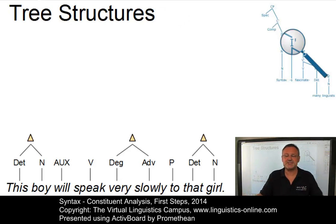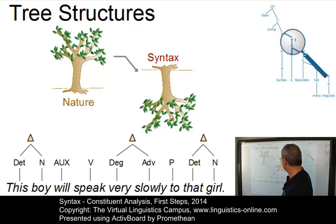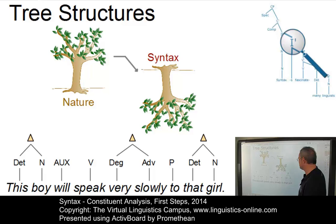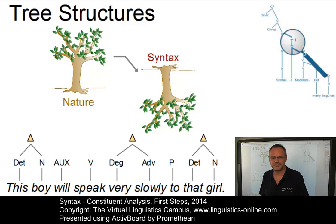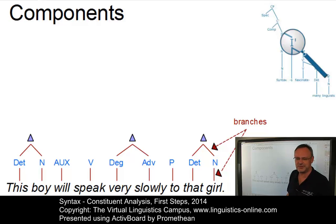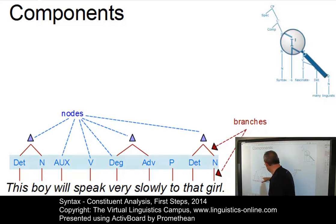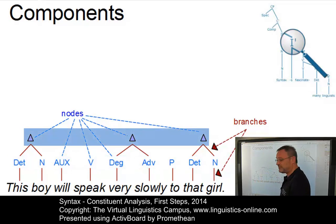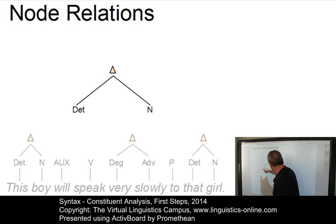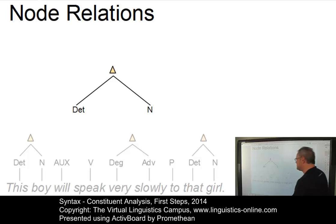The result of constituent analysis is a tree diagram. Interestingly, in syntax it is an upside-down tree. In real life, trees grow from bottom to top, but in syntax they do it the other way around. We are building a tree which will eventually end up with its root. The lines in a tree diagram are referred to as branches — just like in a real tree. The categories within a tree are referred to as nodes. We have the terminal nodes here, and then we have new nodes which label our constituents. This is also called a local tree.